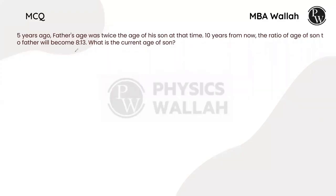Hello students, let us solve a problem on ratio which is related to age. The problem states that 5 years ago, father's age was twice the age of his son at that time. 10 years from now, the ratio of age of son to father will become 8:13. What is the current age of his son?